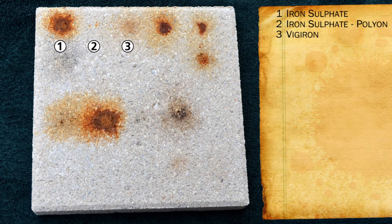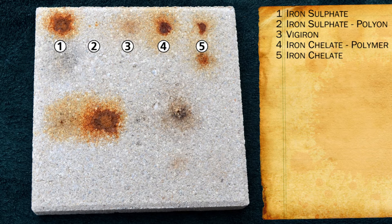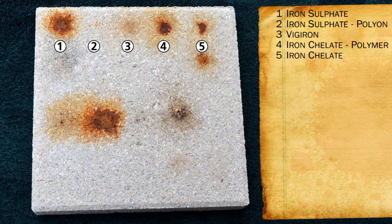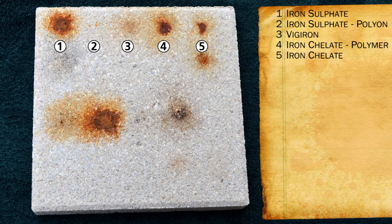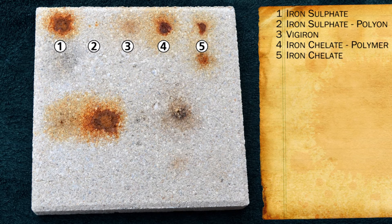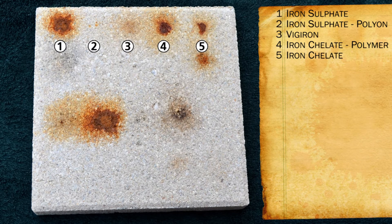Number four is an iron chelate and number five is a polymer-coated iron chelate — not Polyon, but another polymer-coated iron chelate — and we see staining from both of those products. What that means is that even though it's an iron chelate, it still has the ability to be oxidized and produce a stain, which is a little bit surprising. Keep that in mind when applying iron chelates. Yes, they are more available to the plant, but as you can see in numbers four and five, they are also available to be oxidized.